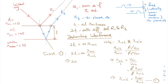Rearranging, we get the final equation where m is the order of interference, taking on integer values. This equation gives the condition for destructive interference, where R1 and R2 meet and cancel each other out.